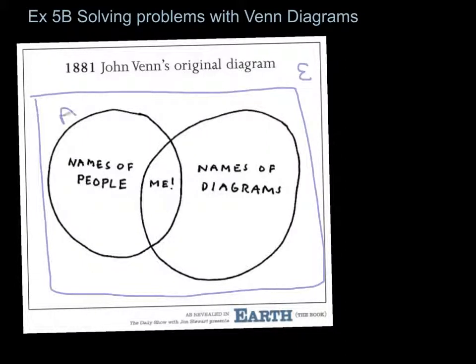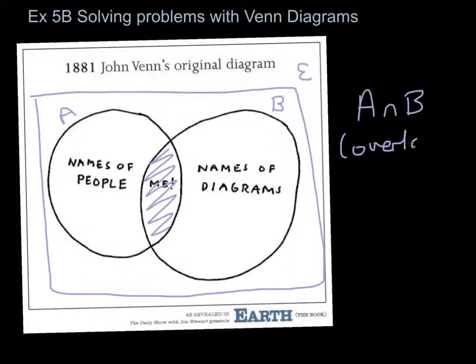Quick revision using John Venn's first diagram. The curly E represents the entire set. We put a box with two circles inside. That's called names of people, set A, names of diagrams, set B. So the intersection where John Venn wrote me is represented by A∩B, and that's where the two sets overlap each other.